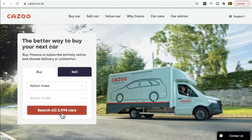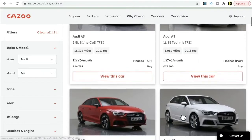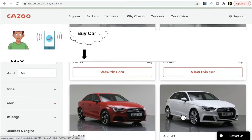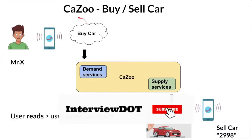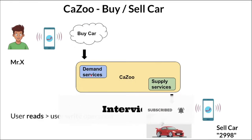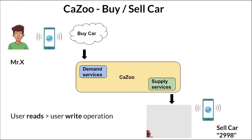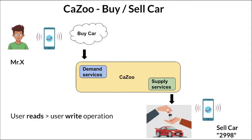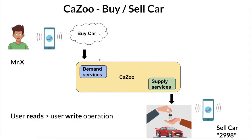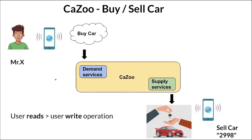Currently the company has around 2,998 cars that users can search. Let's look at the system design for this application. In my opinion there are two groups of people: buyers and sellers. Sellers who want to sell a car can register on the platform and keep their car details so they can be published to buyers. Buyers come to the application, register themselves, and start searching using filters.